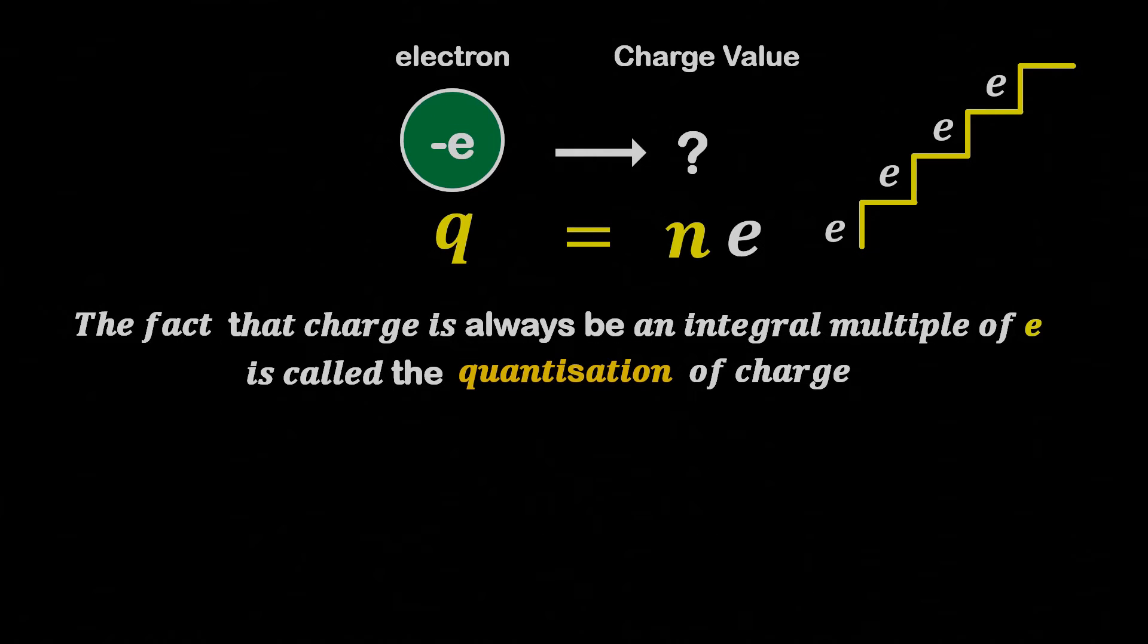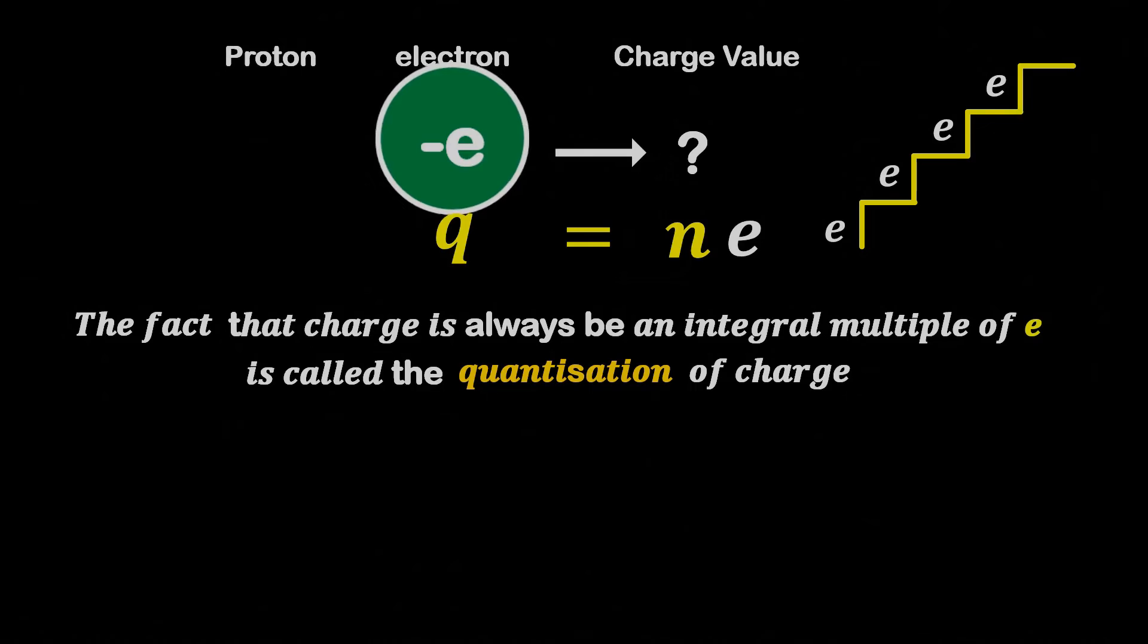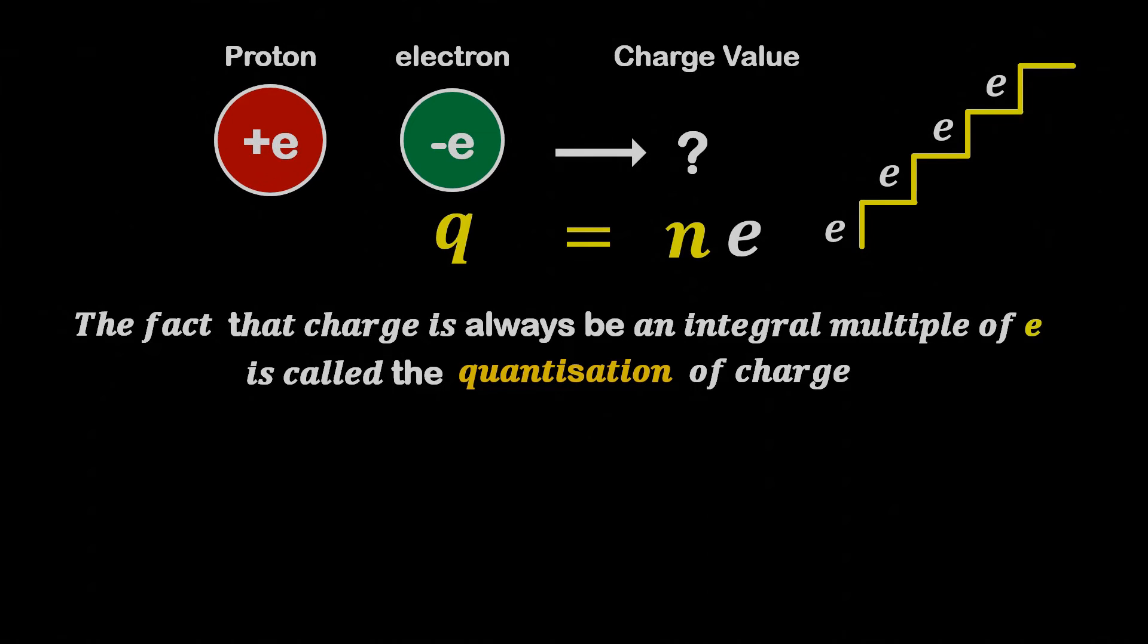Charge on electrons is denoted by minus e, and the charge on protons is denoted by plus e. Now the question arises, how much charge is there in one electron or proton?